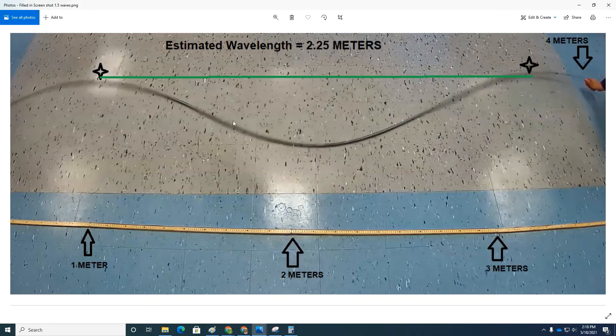Here's another wave. We're measuring from crest to crest to find the wavelength. Each square tile is one foot across.